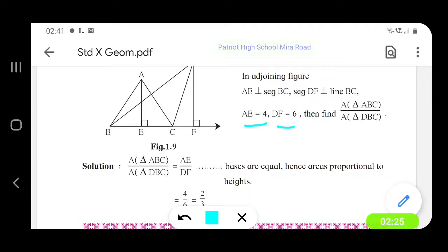So we will substitute AE is equal to 4 and DF is equal to 6, so we get this ratio, 4 upon 6 which is equal to 2 upon 3, which is the answer.